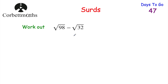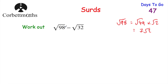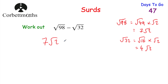Now we've got root 98 subtract root 32. For root 98, the largest square factor is 49, so root 49 times root 2 gives 7 root 2. For root 32, the largest square factor is 16, so root 16 times root 2 gives 4 root 2. So 7 root 2 subtract 4 root 2 equals 3 root 2. Well done if you got that.